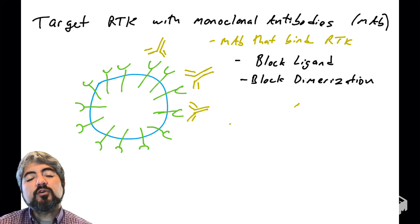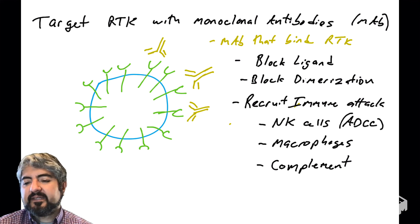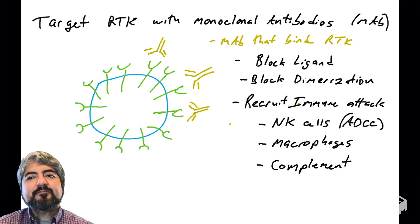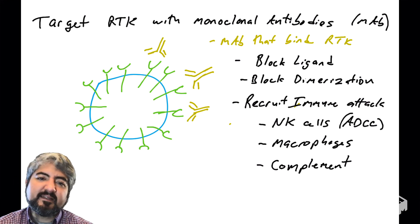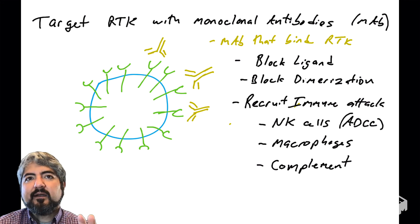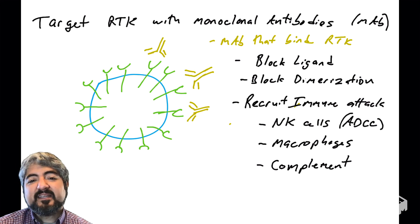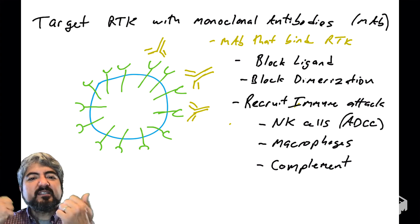There are actually more ways they could function — including recruiting immune attack against the cells. When antibodies bind cells, they can help the immune system identify a target — in this case, a tumor cell rather than a pathogen. One mechanism is antibody-dependent cell cytotoxicity (ADCC), which involves natural killer cells binding to the antibody-coated cell and then destroying it.